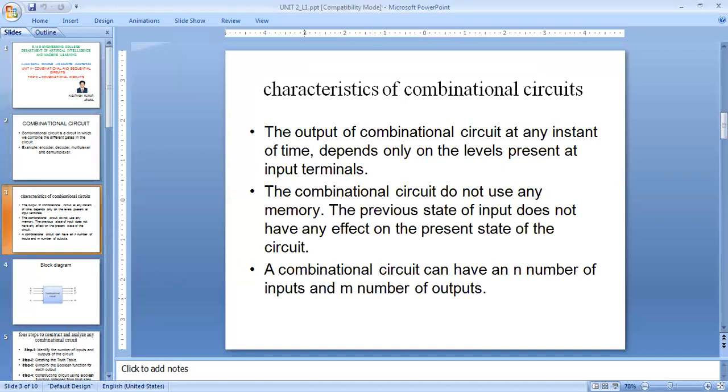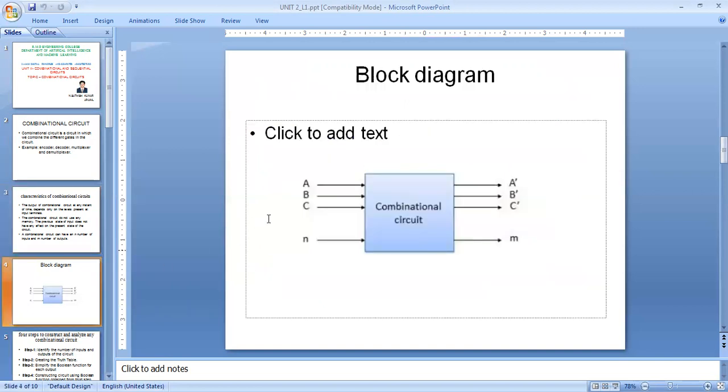As well as combinational circuits are designated with N number of inputs, and based upon the inputs, outputs are designed so we have M number of outputs. In this block diagram, the characteristics exist here. We have N number of inputs and M number of outputs. A, B, C are the inputs specified here, and A dash, B dash, and C dash represent the outputs. These combinational circuits have different gates connected together to perform their respective task.